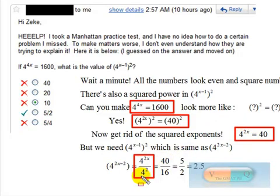So 40 divided by 4 squared, you know that's 16. 40 divided by 16, you can divide it by 8. 40 divided by 8 is 5. 16 divided by 8 is 2. And you get 5 halves, which is 2.5.